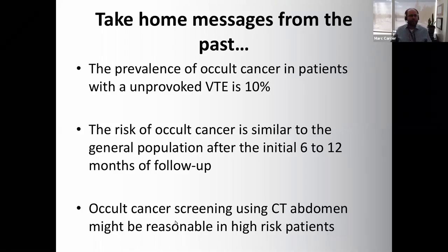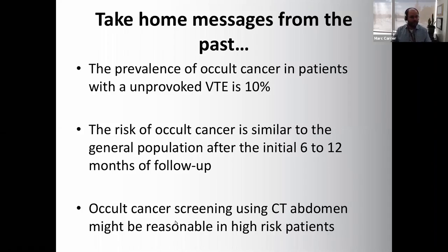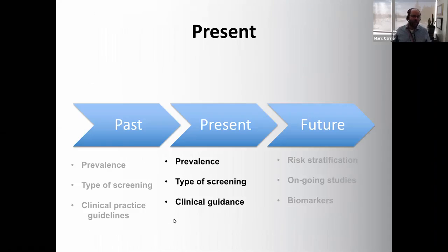Take-home from the past — up to 2008: the prevalence of occult cancer is about 10%, one in 10 patients with unprovoked VTE will have cancer diagnosed in the next 12 months. The risk is front-loaded within the first 6 to 12 months. CT abdomen and pelvis occult cancer screening may be reasonable in high-risk patients. Now, 2008 was 12 years ago — what has happened since, and has the prevalence changed?